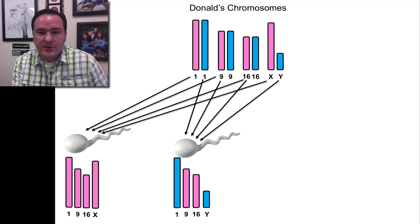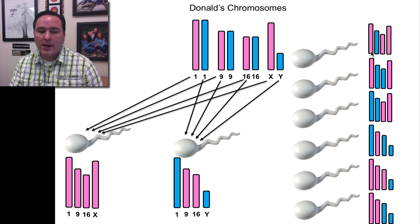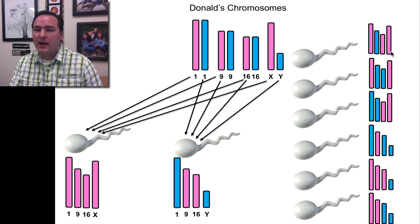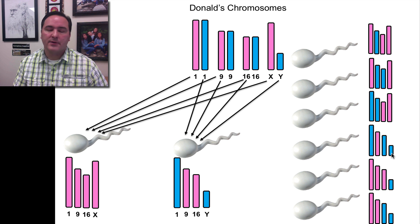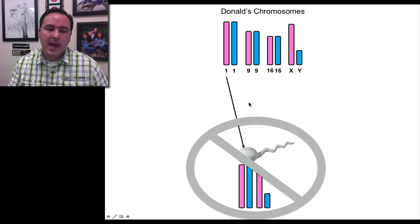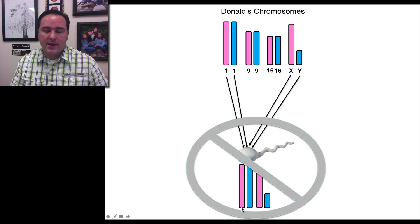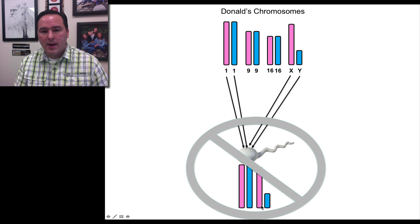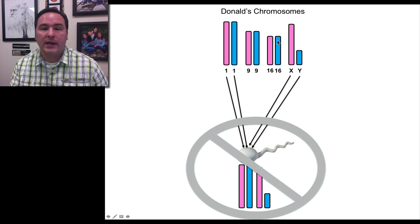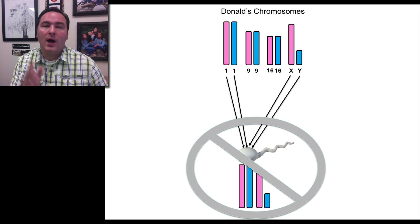You're probably thinking there are lots of other combinations — for example, a pink 1, a blue 9, a pink 16, and the X chromosome; or a blue 1, a pink 9, a blue 16, and the Y chromosome, and so forth. What can't happen, though, is getting a sperm that has both number one chromosomes, or both the X and the Y. You can't end up with a pink number one and a blue number one, and an X and a Y in a sperm — that just doesn't happen. Every sperm is only going to get one of each of the paired chromosomes.